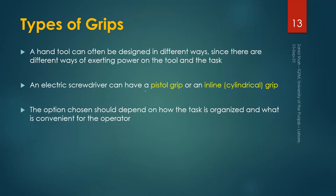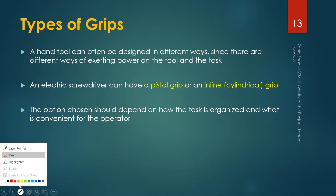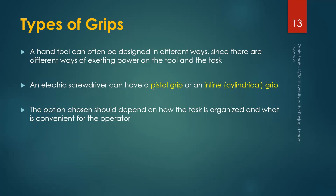The orientation of the handles of tools is also important. A handle of a hand tool can be designed in different ways with different ways of exerting power on the tool and the task. There are two types of handles or grips: the pistol grip and the inline or cylindrical grip. The option chosen should depend on how the task is organized and what is convenient for the operator.